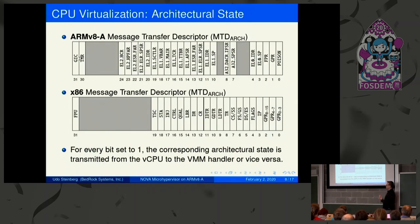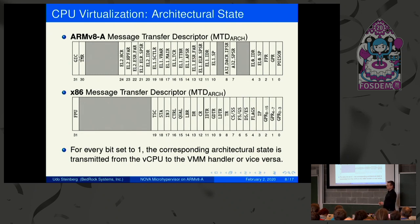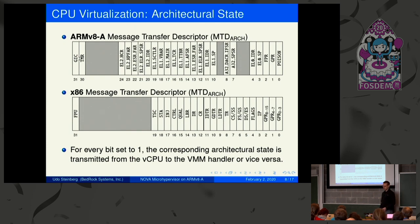Now we get into ARM territory. To hide the differences between x86 and ARM, we use architecture-dependent message transfer descriptors. The MTD arc for ARM and x86 is essentially a bit field describing the different architectural state fields, listed in the Nova interface specification. The VM decides for every event which parts of the architectural state it wants, and by using this descriptor we can completely reuse all mechanisms — it's just a message that looks different depending on the architecture.